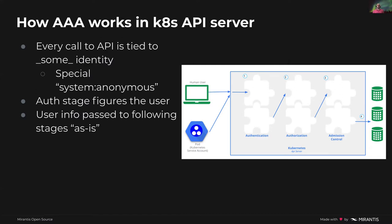There's also a special 'system:anonymous' identity used when the user identity cannot be determined. After the authentication stage figures out the user identity, it passes that information as-is to the following stages — namely the authorization stage. That's the key part to understand: authentication gives the user information as-is, basically as a string. There's no higher or more fine-grained representation than that.